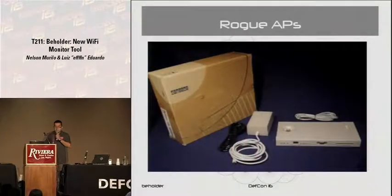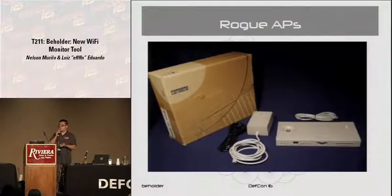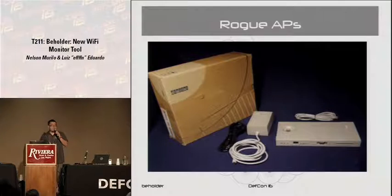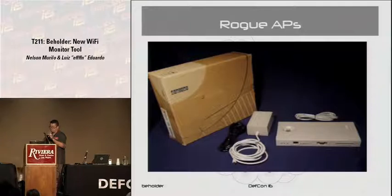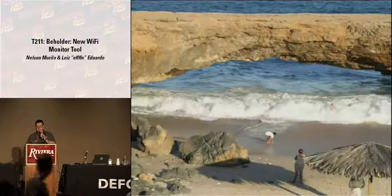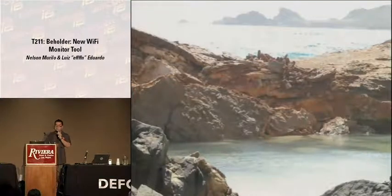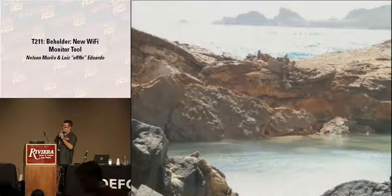More about rogue access points: when you think about wireless IDS systems, you think of the 802.11a or 802.11b/g access points you buy at Fry's. But you can still buy really old access points from Cabletron or Digital — some are not 802.11b or A, some are 900 megahertz. If you have sensors that only work in 2.4 and 5 GHz, you're not going to see that. Then you have wireless bridges — which can also be a rogue concern.